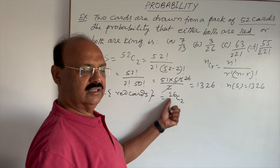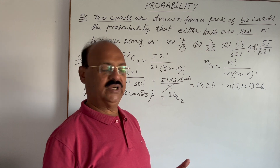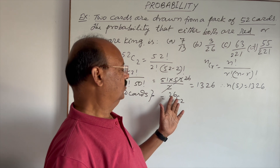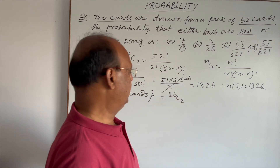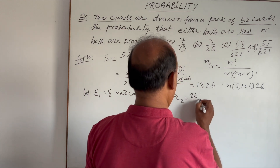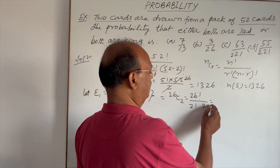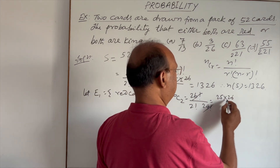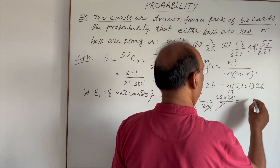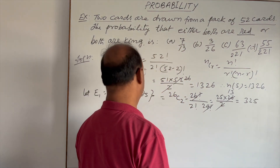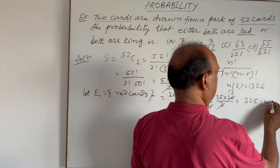Out of 26 red cards, 13 are diamonds and 13 are hearts, making 26 red cards total. The number of ways to choose 2 from 26 is 26C2. Evaluating: 26 factorial by 2 factorial into 24 factorial. The 24 factorial cancels, giving 25 × 26 divided by 2 = 325. So n(E1) = 325.